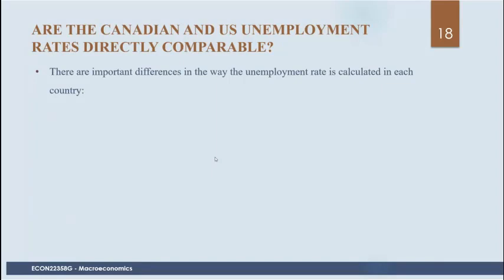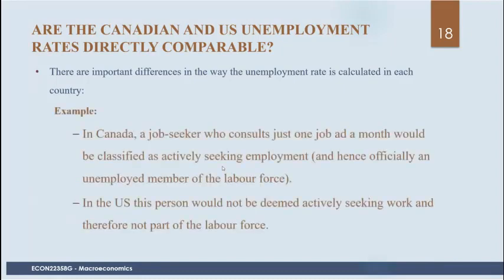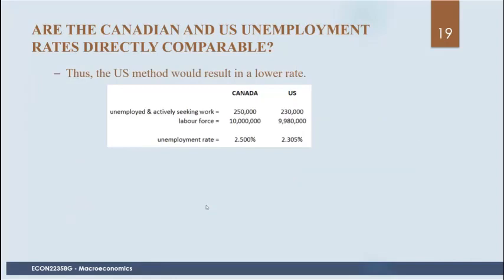There are important differences in how the unemployment rate is calculated in the US and Canada. In Canada, a job seeker who consults just one job listing a month would be classified as actively seeking employment and thus part of the labor force. In the US, this person would not be deemed actively seeking work and therefore not part of the labor force. Thus the US method results in a lower unemployment rate.